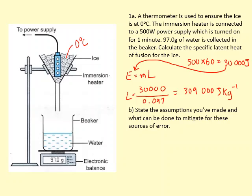State the assumptions you've made and what can be done to mitigate for these sources of error. We've assumed that all of the energy supplied to the ice is just from the heater, but obviously it's in a room and the room could be hot, so it could be transferring energy to the ice. Also the beaker could cause it to melt. Another thing we should really have done is insulated it.